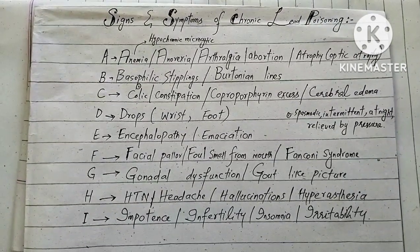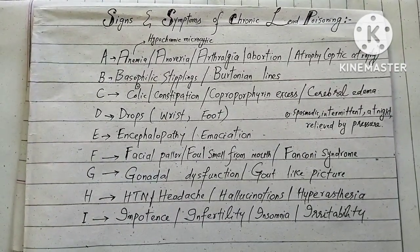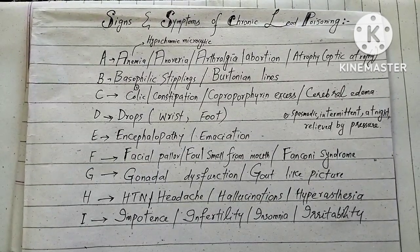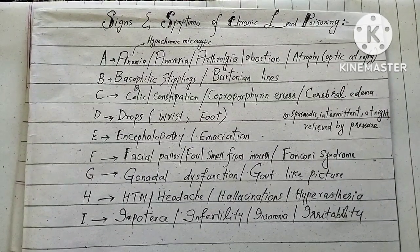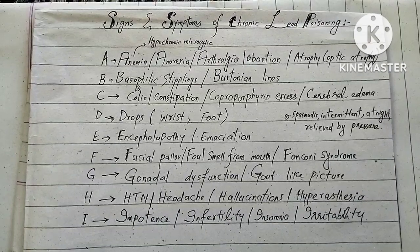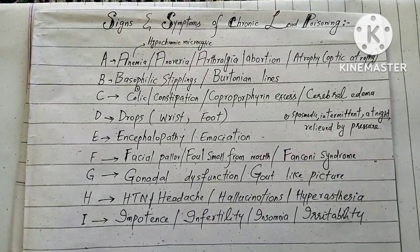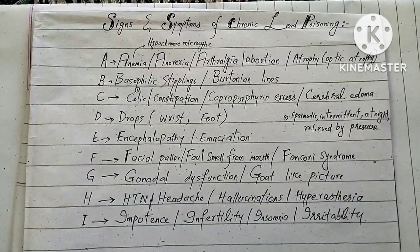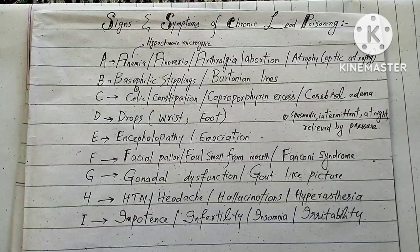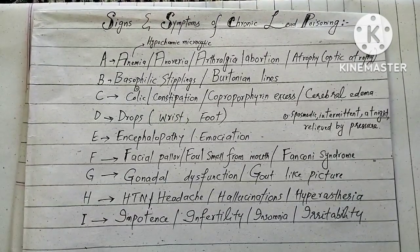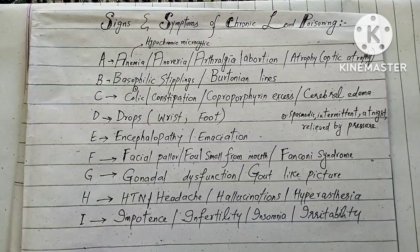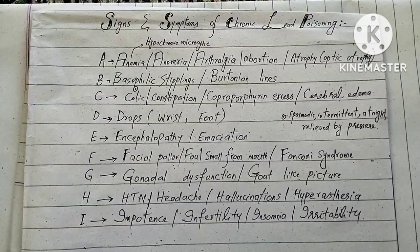F stands for facial palsy, foul smell from the mouth, and von Koenig syndrome. G stands for gonadal dysfunction and a gout-like picture. H stands for hypertension, headache, hallucinations, and hyperesthesia.